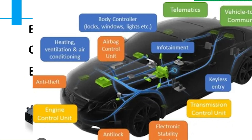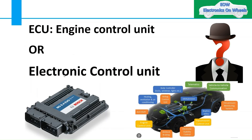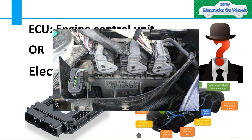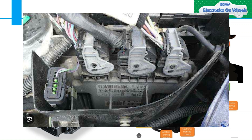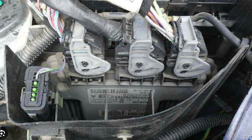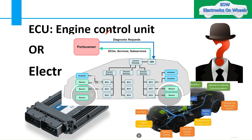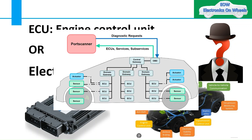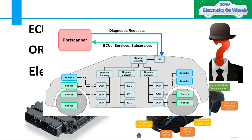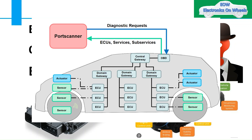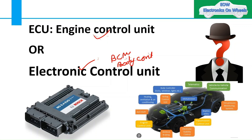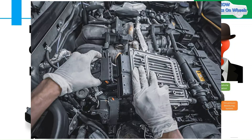ECU stands for engine control unit or electronic control unit. The term ECU may refer to an engine control unit, but ECU also refers to an electronic control unit, which is a component of any automotive mechatronic system — not just engine control. In the automotive industry, ECU often refers to the engine control unit or engine control module (ECM). If this unit controls both the engine and the transmission, we call it PCM — power train control module.